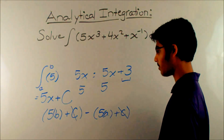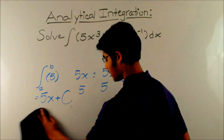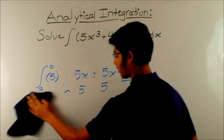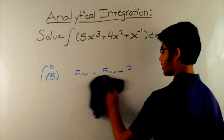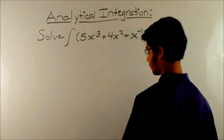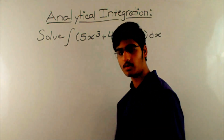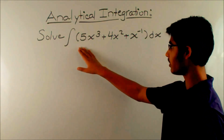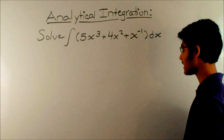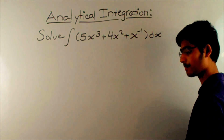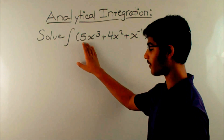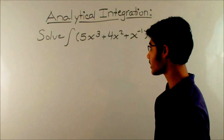So let's move on to solving our problem. When we're solving analytically, we have to remember the fundamental theorem of calculus, which basically says that the integral is the anti-derivative. We have to solve this integral of 5x cubed plus 4x squared plus x to the negative first power dx. This is an indefinite integral, so let's start with the first term: 5x cubed.